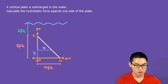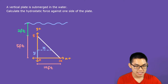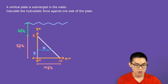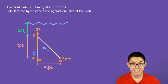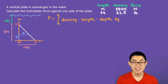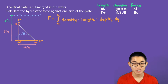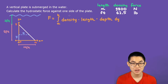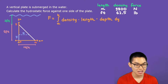The height from the center to this stripe we call y. The length of the stripe we don't know yet, so we'll call it x. Here is the formula to calculate the hydrostatic force, as shown in the previous video.